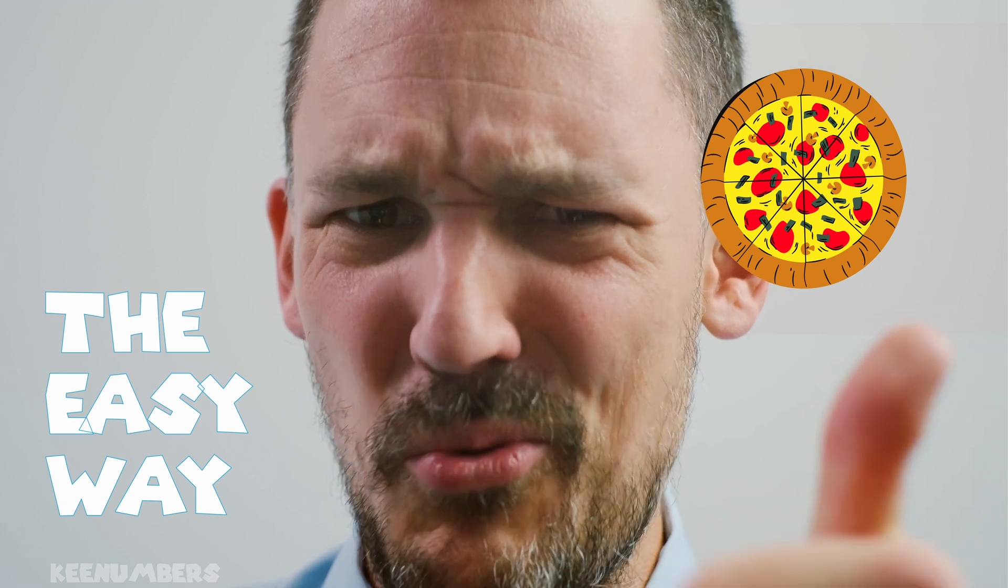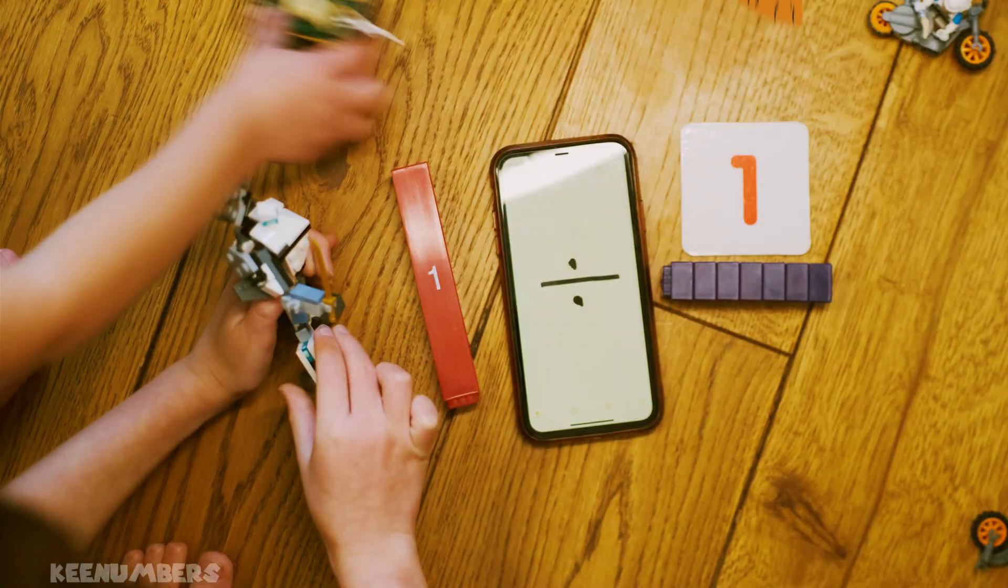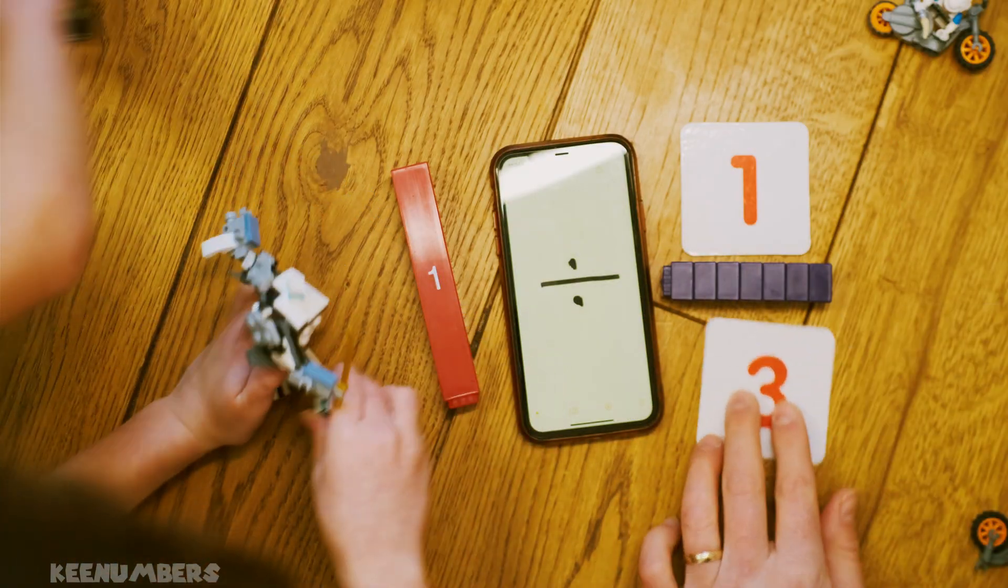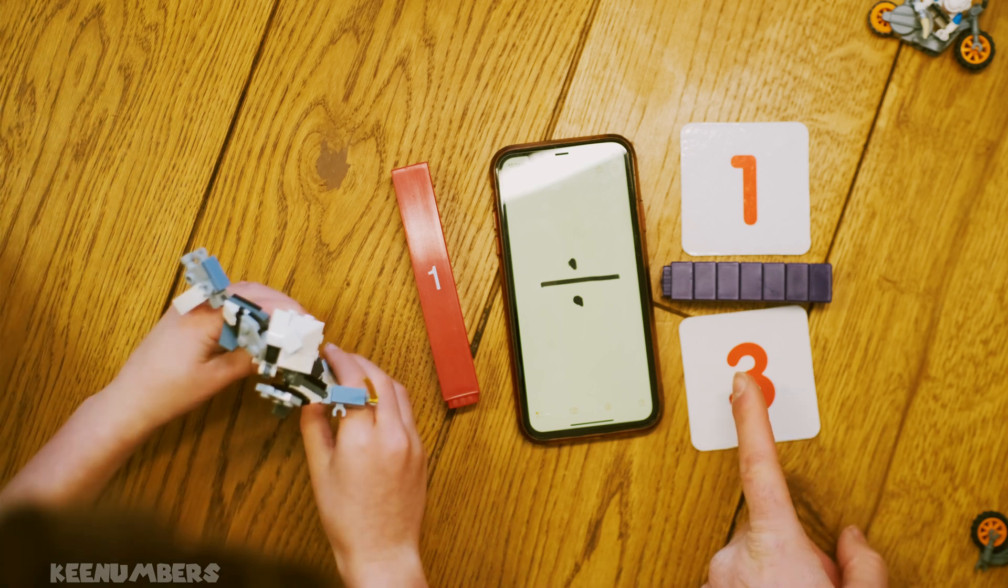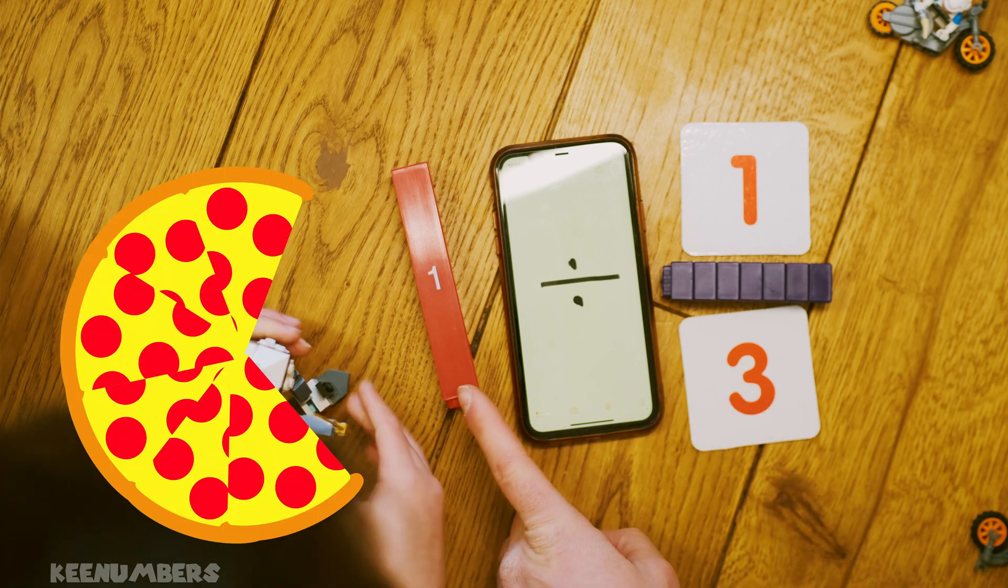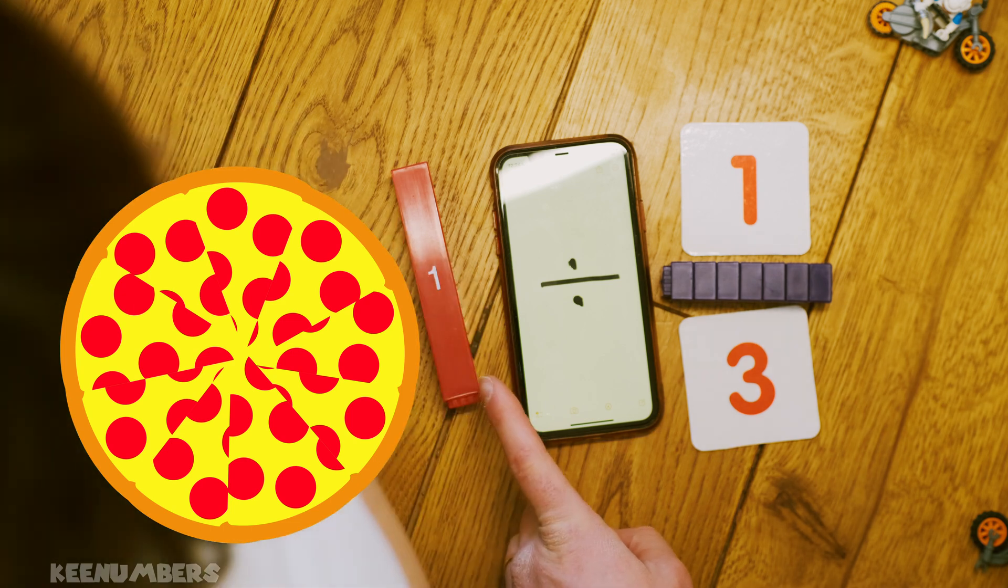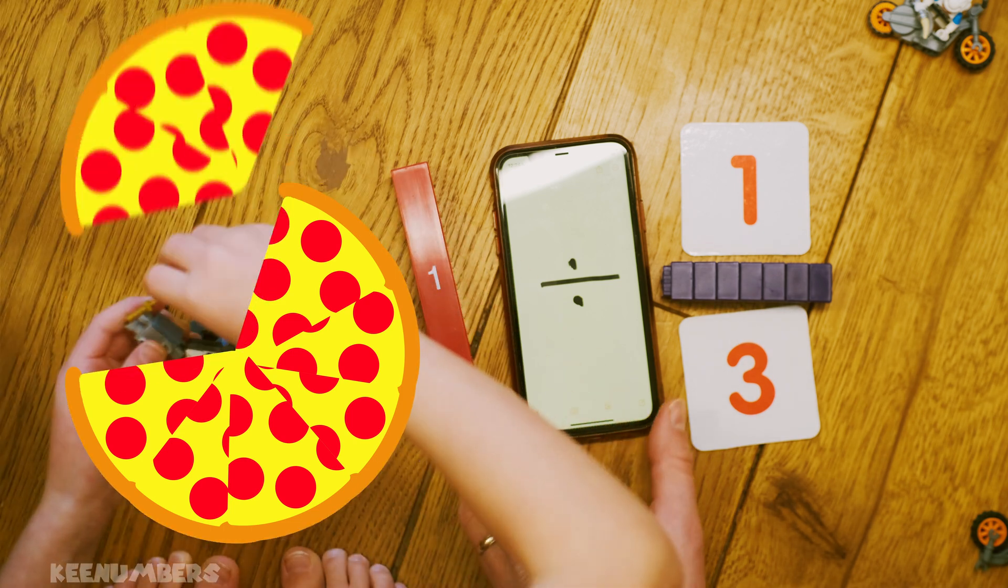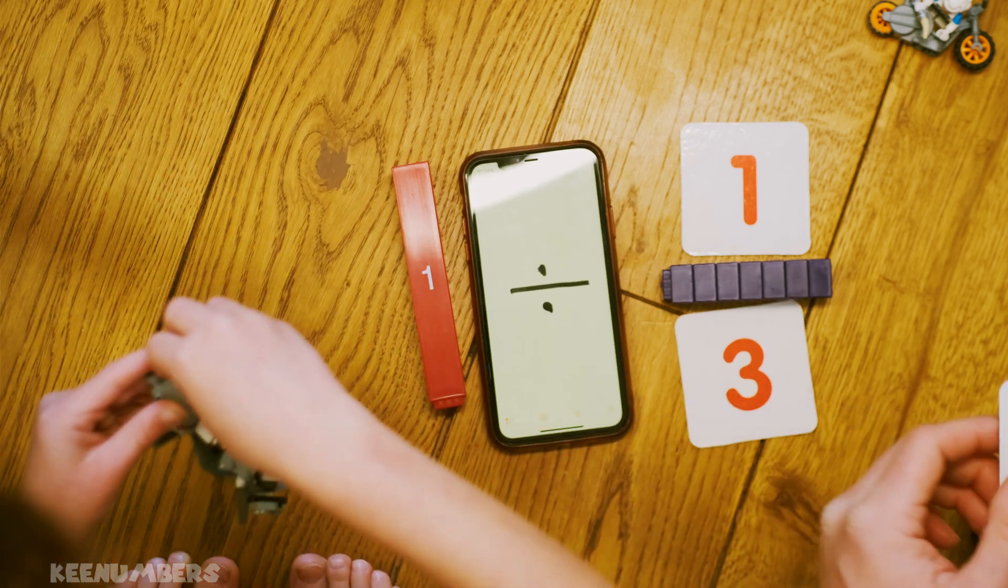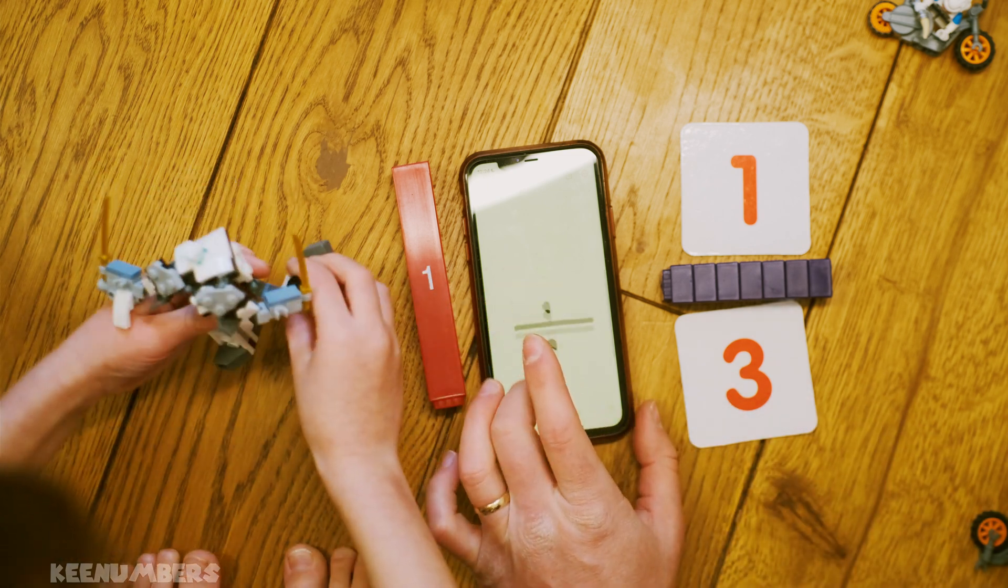Let's do this the easy way. One divided by one third. How many thirds are in one? Three. This is the same thing as saying three. Think about a pizza. There are three thirds in a pizza. Pizza? Pizza, pizza, pizza.